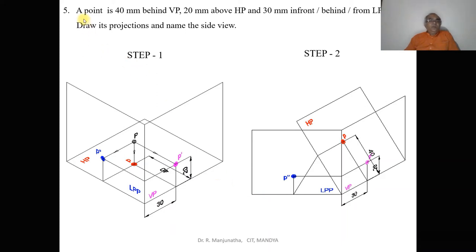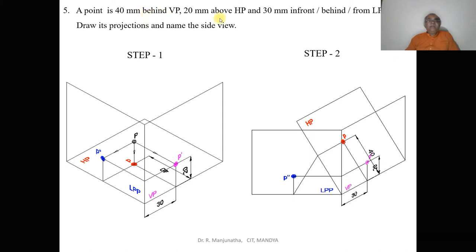In this video we will discuss about the projections of a point in the second quadrant and how to solve this problem. A point is 40 mm behind VP, 20 mm above HP, and 30 mm in front of or behind or from LPP. We know this is in the second quadrant because the condition given is behind VP and above HP, as discussed in our earlier video.